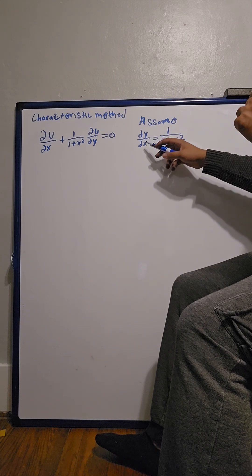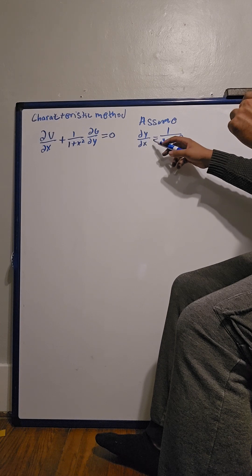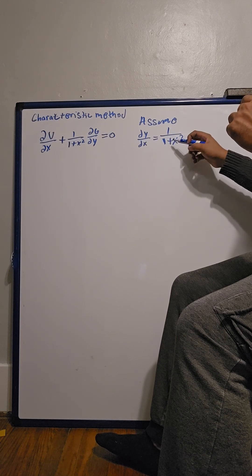Now our characteristic curve is going to be determined by dy over dx, and we're going to assume that equals 1 over 1 plus x squared.